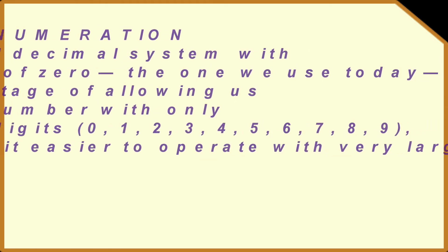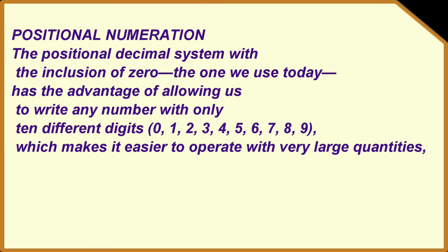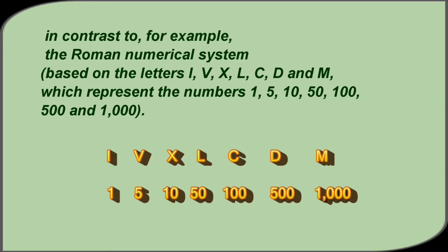Positional numeration. The positional decimal system with the inclusion of 0, the one we use today, has the advantage of allowing us to write any number with only 10 different digits, i.e. from 0 to 9, which makes it easier to operate with very large quantities. In contrast to, for example, the Roman numerical system based on the letters I, V, X, L, C, D, and M, which represents the numbers 1, 5, 10, 50, 100, 500, and 1000.